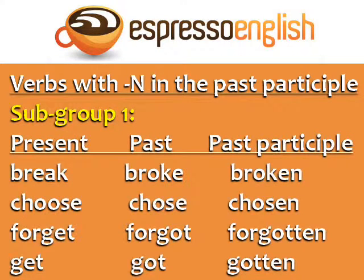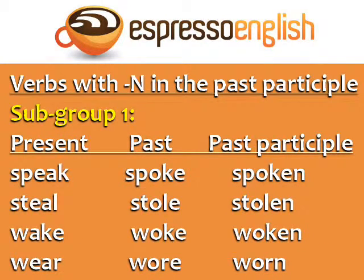Subgroup one: the vowel changes to O in the past and past participle. Break, broke, broken. Choose, chose, chosen. Forget, forgot, forgotten. Get, got, gotten. Speak, spoke, spoken. Steal, stole, stolen. Wake, woke, woken. Wear, wore, worn.